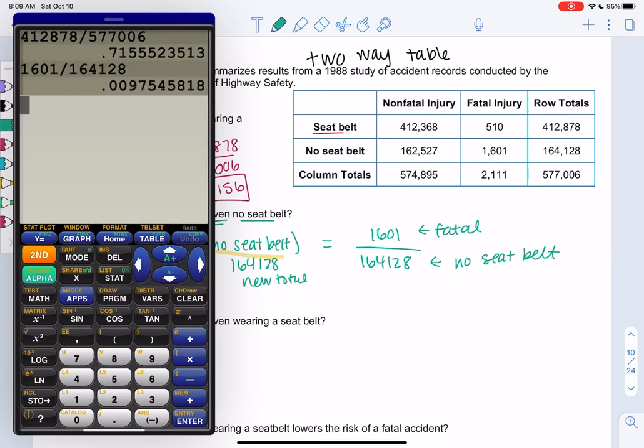It's pretty small. It's only 0.0098, which really means a 0.98% chance of fatal if you're not wearing a seatbelt. Which feels like a really small chance, but let's compare it to if you wear a seatbelt.